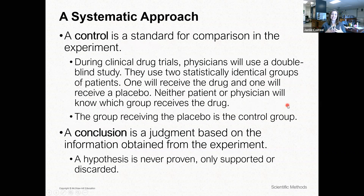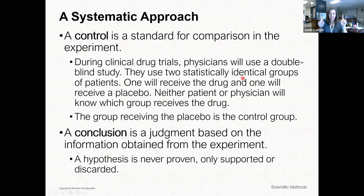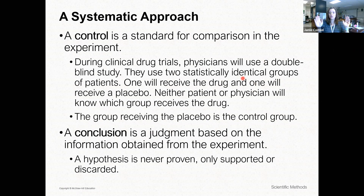Everything else has to be the same — that type of bacteria is your control, a standard for comparison in the experiment. You only want two things to change: independent and dependent. So you control everything else. The two things that change with the bacteria analogy are temperature and bacteria growth; everything else stays the same.